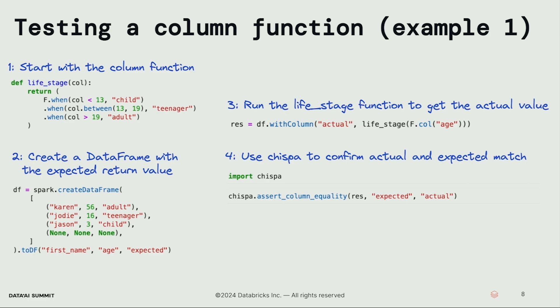We invoke the life_stage function and append a column called actual to this DataFrame, populated by invoking life_stage with the age column as the input value. We import Chispa and invoke the assert_column_equality function, passing in the DataFrame and then the expected column name and the actual column name. That's pretty straightforward — how to unit test a column function.